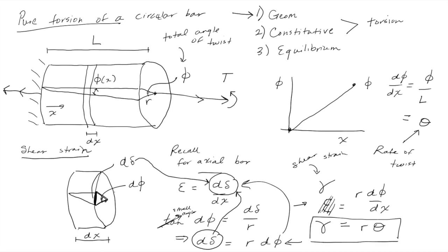That is the shear strain on the outer surface. You can see that because the radius goes from zero at the center and gets bigger as you move out, this is going to be the maximum gamma we find — because r is at its maximum value. If we wanted to measure the strain at some interior point at distance rho, we simply replace r with rho. So gamma changes linearly from zero at the center to its maximum value on the outer surface of the bar.